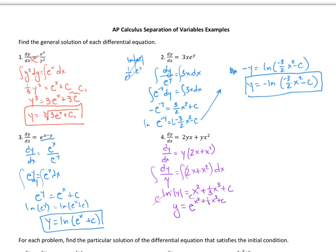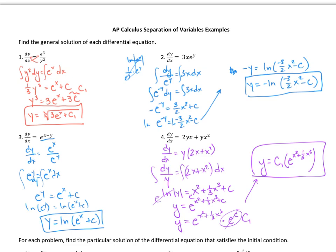Now I want to break this apart: y equals e to the x squared plus one-third x cubed times e to the c. Since e to the c is just a constant, I'll rewrite this as y equals c1 times e to the x squared plus one-third x cubed.